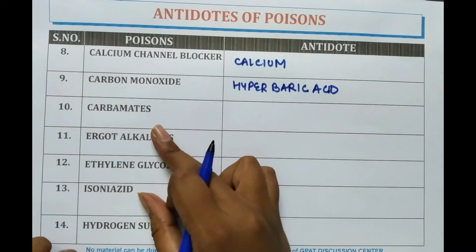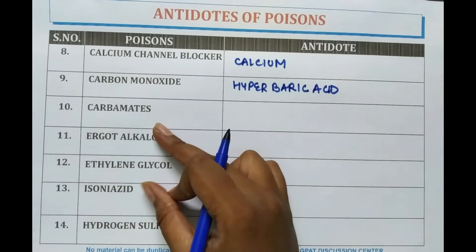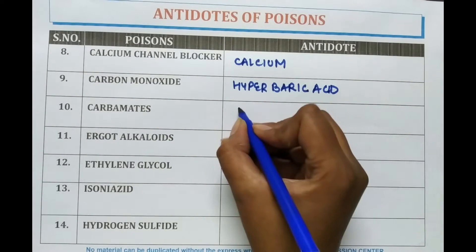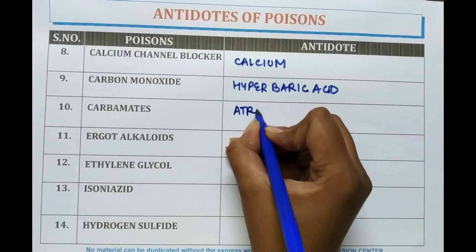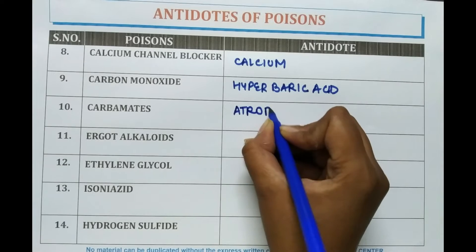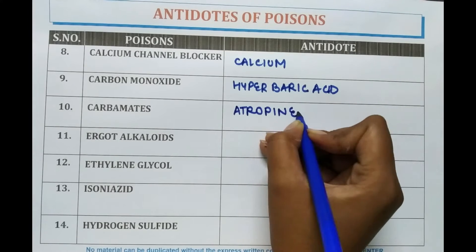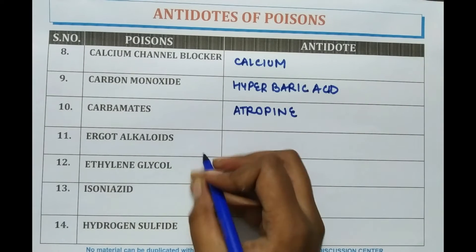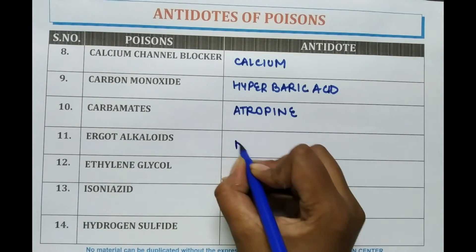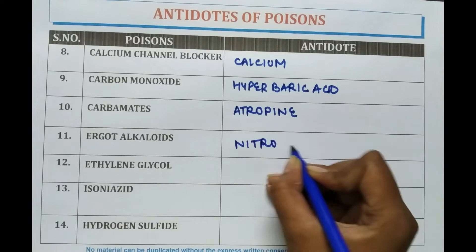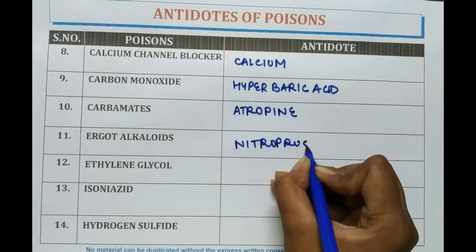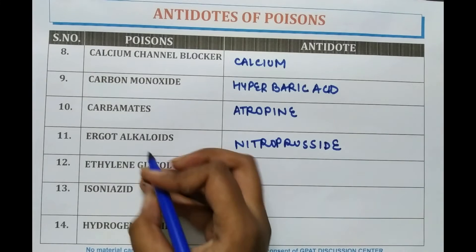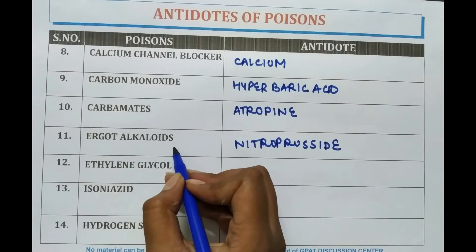In case of poisoning by carbamates, atropine is given as the antidote. For ergot alkaloid poisoning, nitroprusside is given.